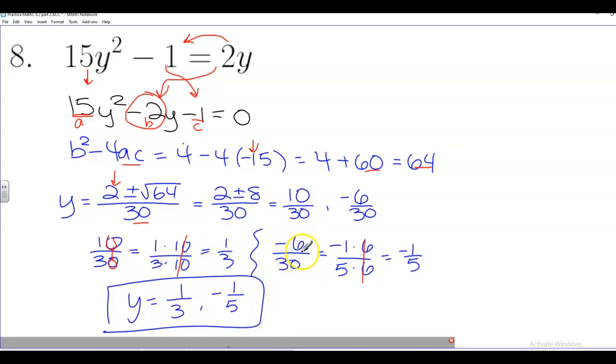And then negative 6 over 30, they both have 6 in common. So negative 6 is negative 1 times 6. 30 is 5 times 6. The 6s cross-cancel. We're left with negative 1 fifth. There we go. Y equals 1 third or negative 1 fifth.